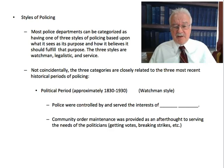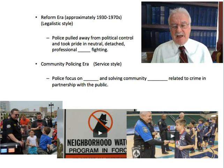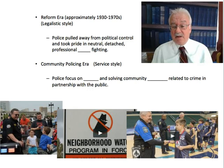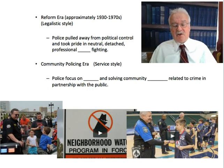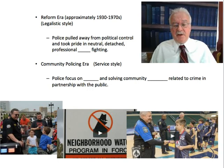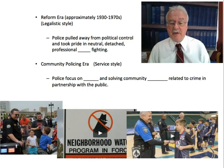The next period was the reform era, roughly 1930 to 1970. The cities were growing rapidly in the political era, packed with new immigrants, and the corrupt political machine was having a hard time delivering services. By the 1930s, the people were sufficiently upset to throw out these political machines and bring in reformers. The police pulled away from political control and began to take pride in being neutral, detached, professional crime fighters. It was during this reform era that the legalistic style of policing came into being.